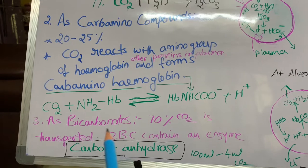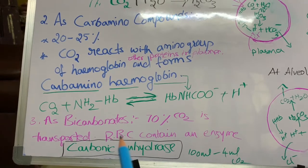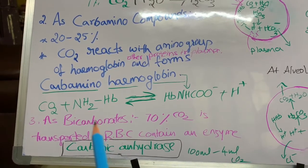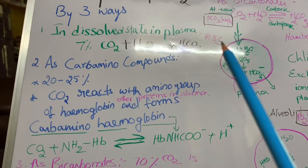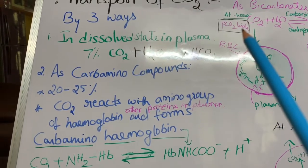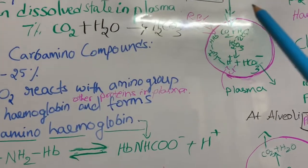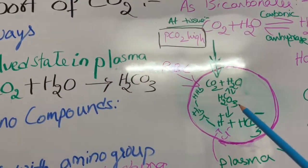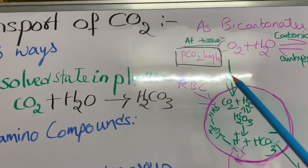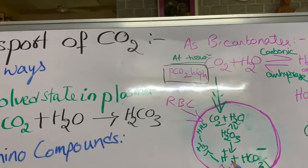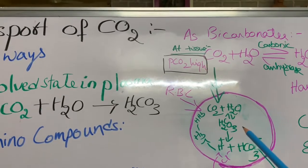The third and most important method is as bicarbonate. Seventy percent of carbon dioxide is transported through RBCs in the form of bicarbonate. At the tissue level, partial pressure of carbon dioxide is very high, so carbon dioxide enters into the RBC.